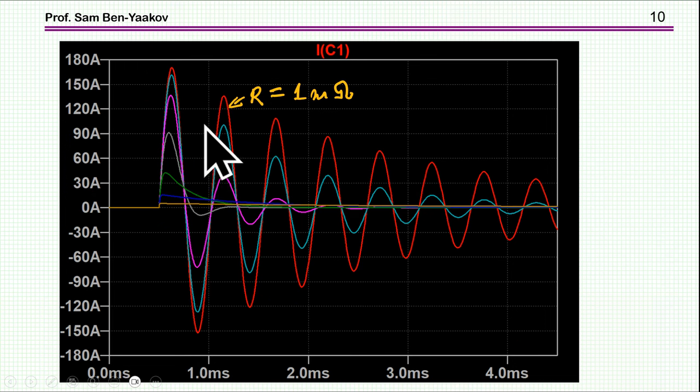Here I'm sweeping the resistance. For a very low resistance, 1 milliohm, you see that we are getting very high current but we have oscillations here. The larger the resistance, the peak current goes down. Frequency is about the same because we have the same LC, but you see that for a lower Q, the half of the period is really changing.